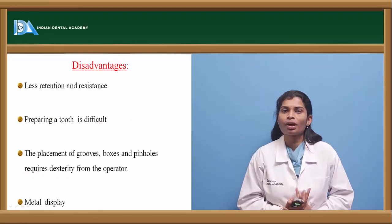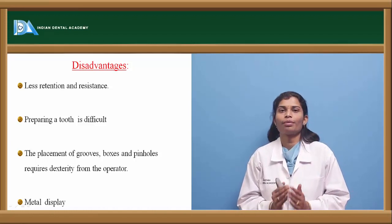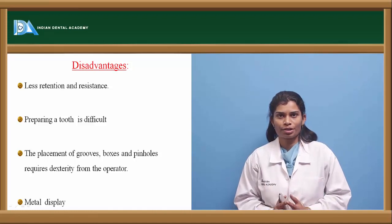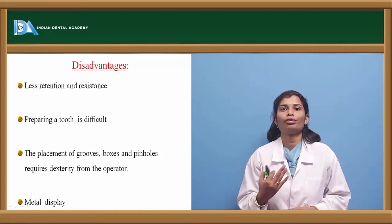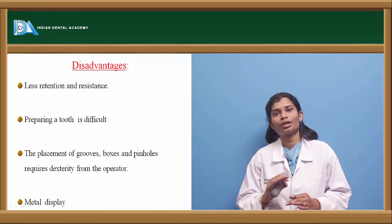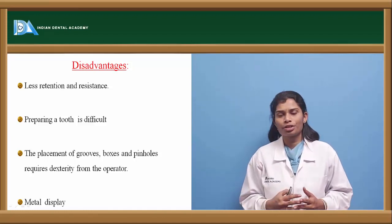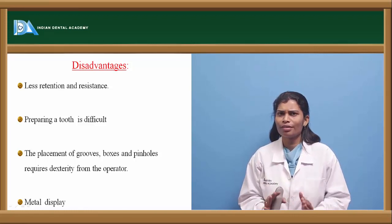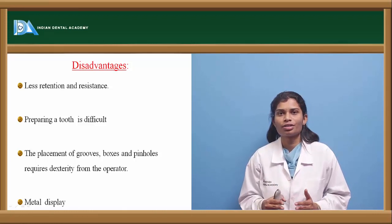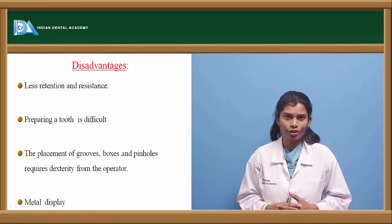Disadvantages: Partial veneer crowns have less resistance and retention form because very little surface is covered and tooth preparation is limited. Retention and resistance are compromised, which is why they cannot be used as retainers for long-span FPDs. Tooth preparation is also difficult as many retentive features must be incorporated; it requires good dexterity and good laboratory support.